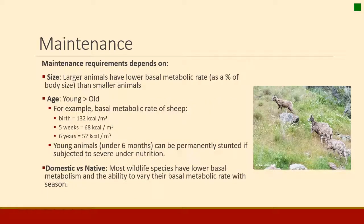Maintenance requirements vary by size, age, and whether animals are domestic or not. Large animals actually have fairly low basal metabolic rates as a proportion of their body size compared to small animals. Large animals like elephants, cattle, or large ruminants require less energy per unit of body mass than a small animal like a mouse or a bird. So smaller animals actually have a greater need for high-quality food than large animals.